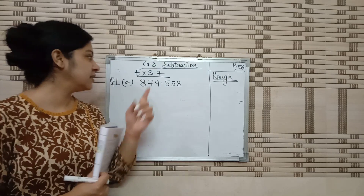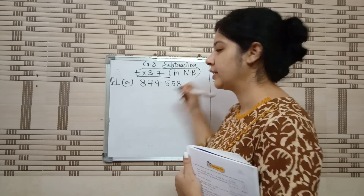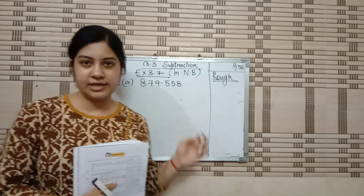Good morning students. Today we will do exercise 3.7 of page number 56 in your notebook. It's an estimation question — you have to round off these numbers to the nearest tens. You have learned how to round off numbers in chapter 1 and chapter 2. For nearest tens, we take base number 5. Numbers smaller than 5 are rounded off to the previous tens place, and numbers including 5 and greater than 5 are rounded off to the next tens place.